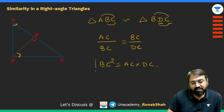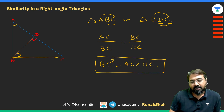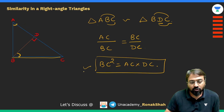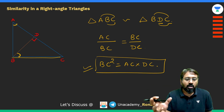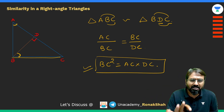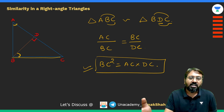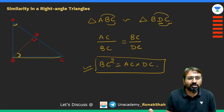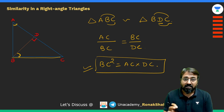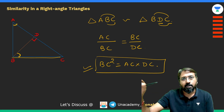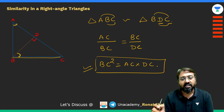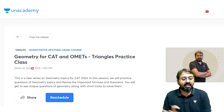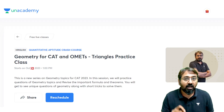Another important relation from this similarity: AC/BC = BC/DC, which gives BC² = AC × DC. This is a very important result — the square of one side equals the product of the hypotenuse and the adjacent segment. In the exam, instead of memorizing the formula directly, draw the figure, apply similarity, and derive the ratio — that approach takes only 10 to 15 seconds and is more reliable.